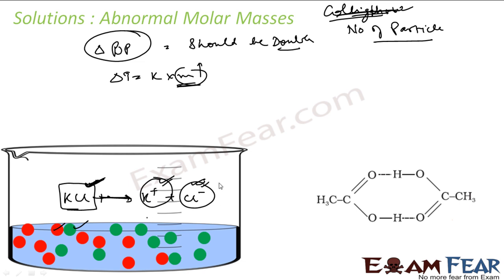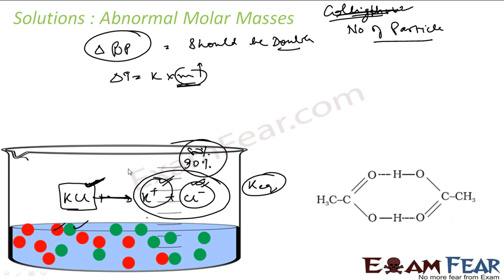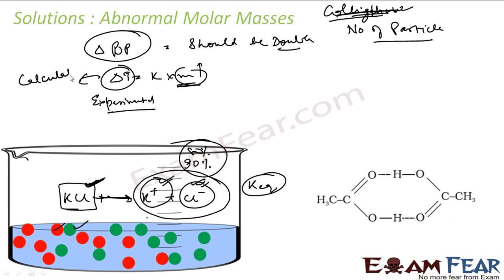But the dissociation is not 100%. You must have seen the equilibrium constant K. So the dissociation may be 90% or 80% — it depends on various factors. Therefore, the experimentally determined value will be different from the calculated value. The calculated value and experimental value will not match; they will differ.